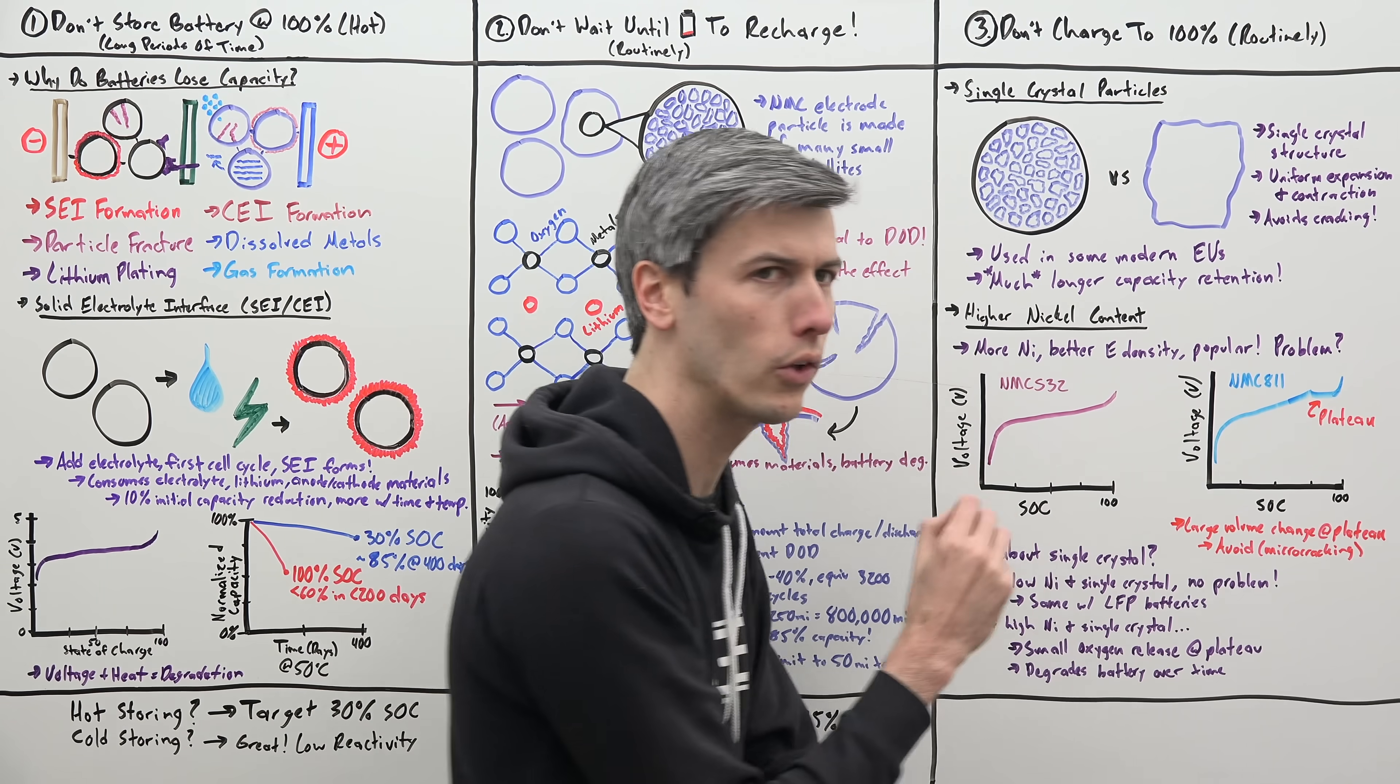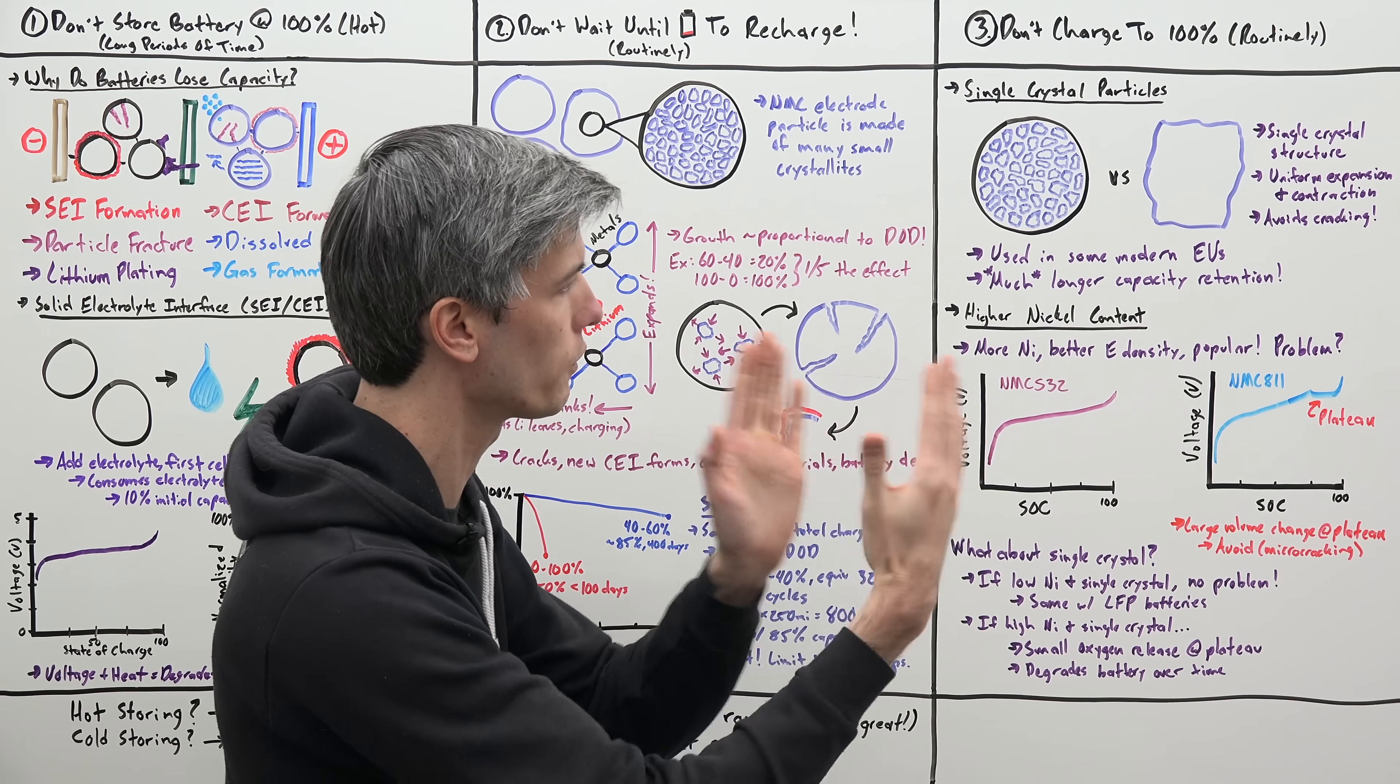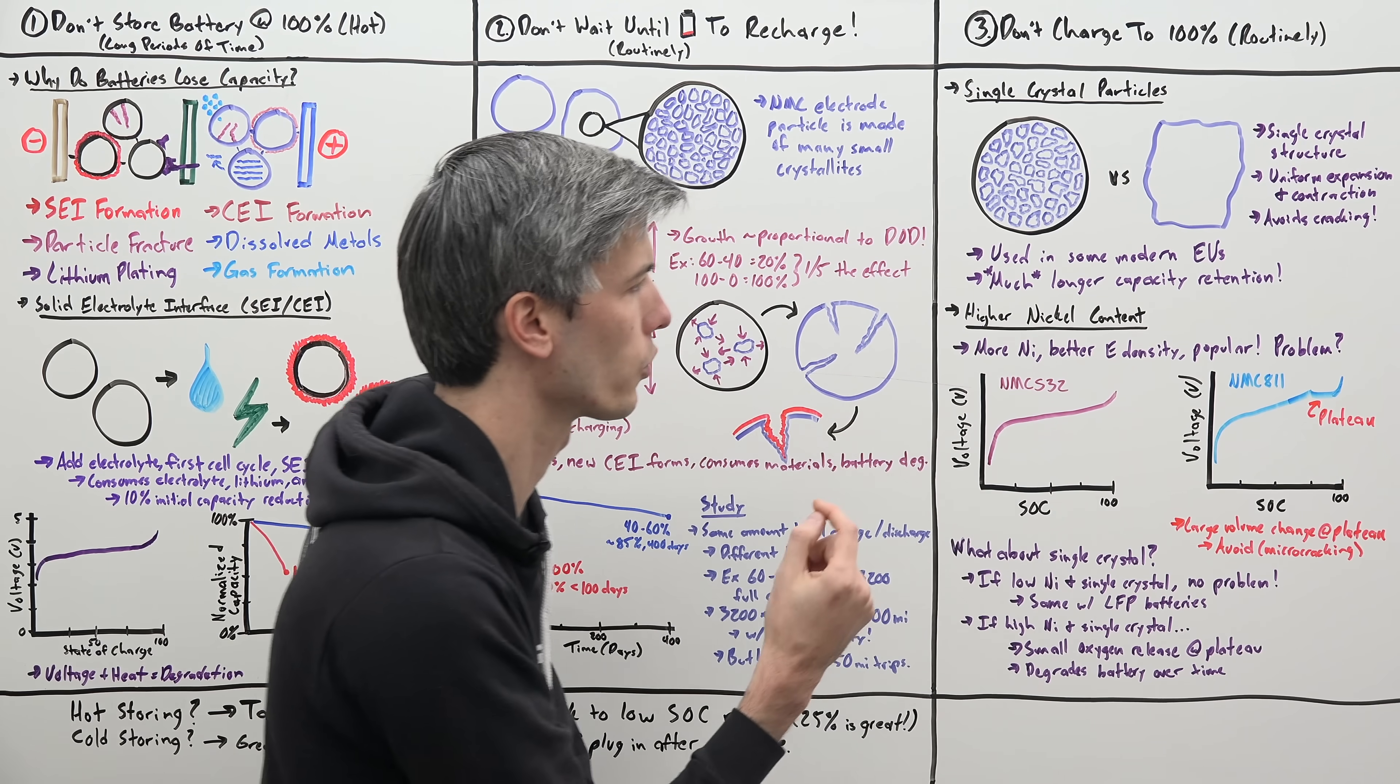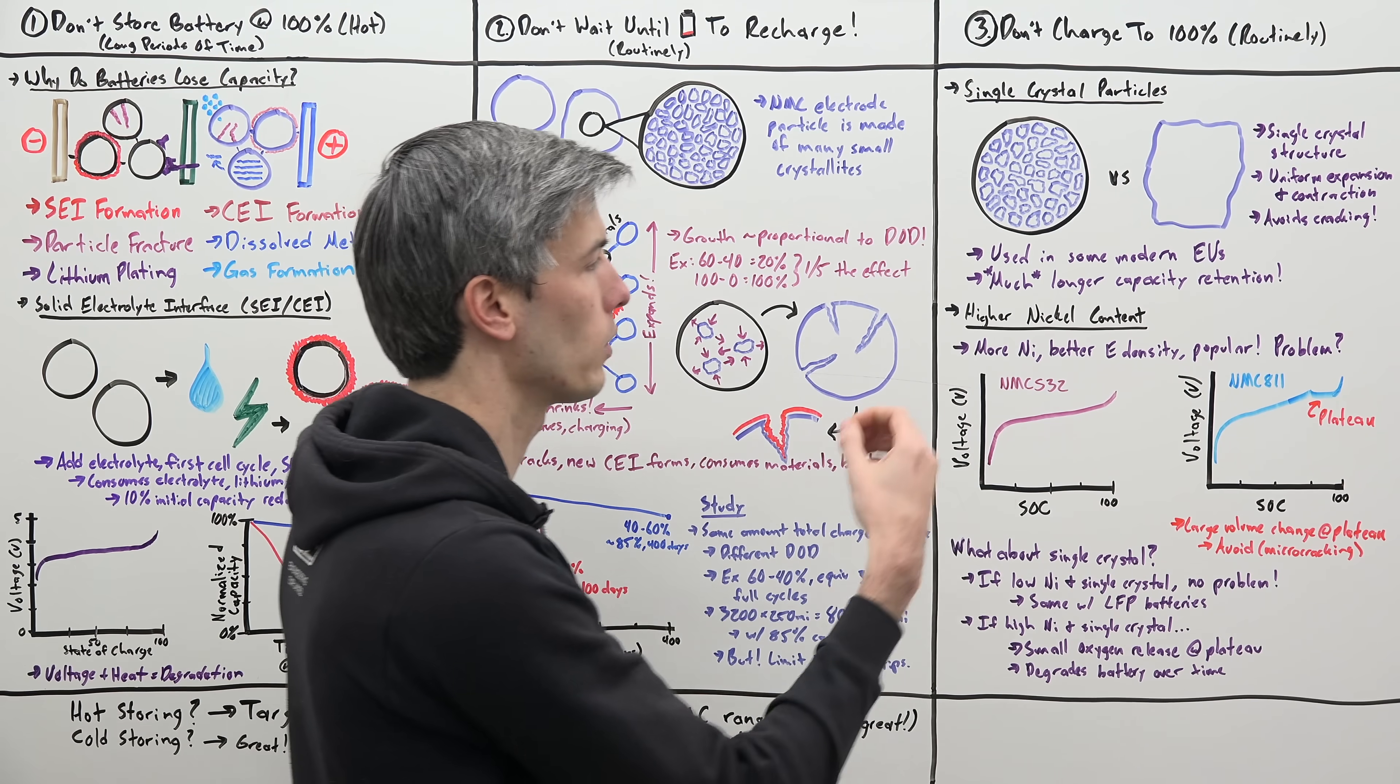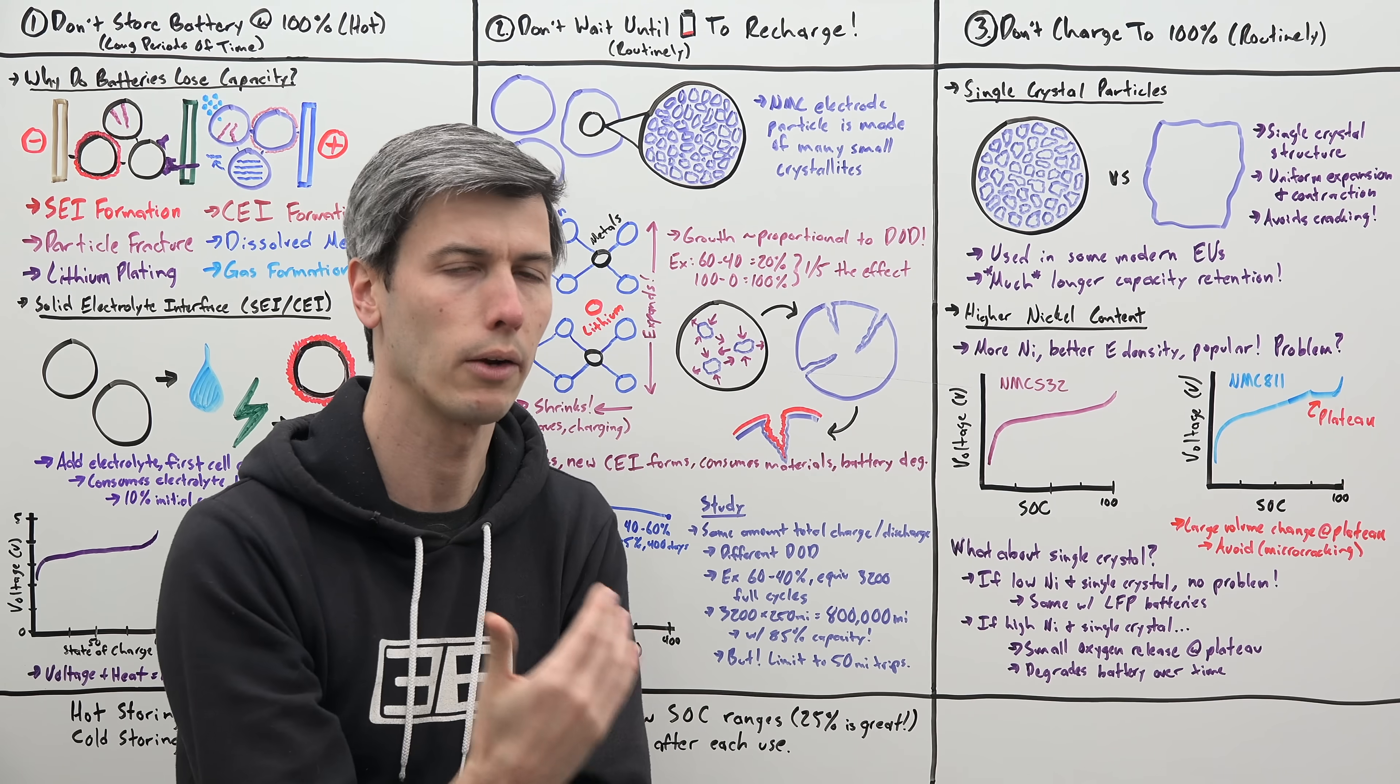this plateau is also associated with a very small amount of oxygen being released during that portion of charging. So you want to avoid this even if you're using a single crystal structure, if you have a high nickel content battery, because that relates to gas formation within the battery, which means you're going to have degradation over time.